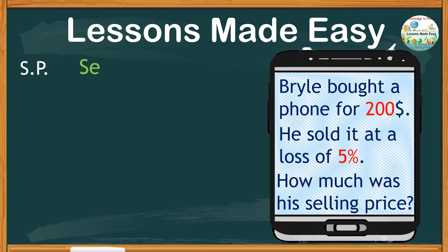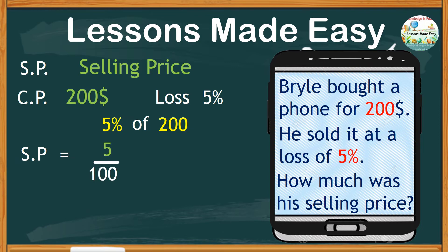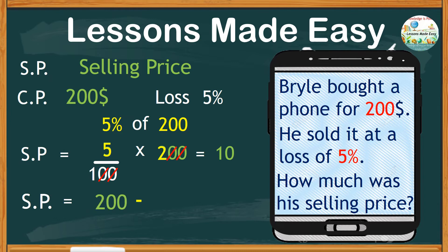Let's try a different method for the same problem. With a cost price of $200 sold at 5% loss, we find 5% of 200. Since percent is over 100, 5% is expressed as 5 over 100, and 'of' means multiply by 200. We cancel the zeros, leaving 5 times 2, which is 10. To find the selling price, we take the cost price of $200 minus the 5% loss of $10, giving us the same answer of $190.